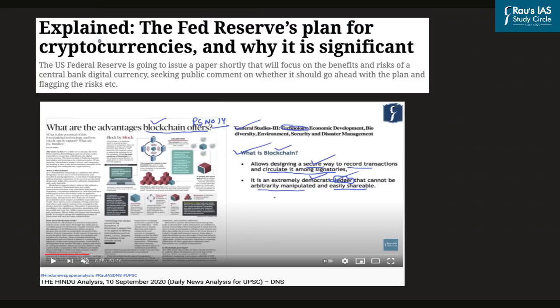This article from the Indian Express explained section reads: 'The Federal Reserve's plan for cryptocurrencies and why it is significant.' The Federal Reserve here relates to the Federal Reserve Bank of the United States of America, which is likely to come out with a white paper on its plan for any central bank digital currency it is likely to issue.